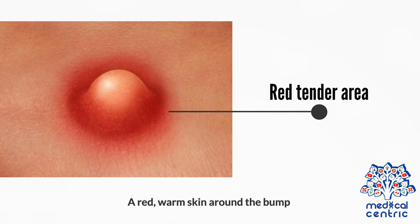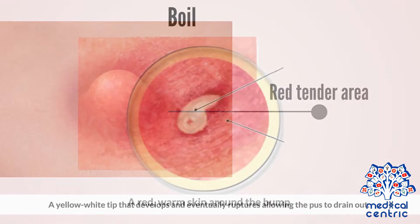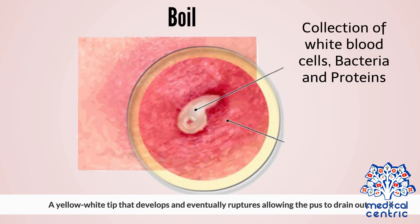Symptoms include a painful red bump, a red warm skin around the bump, and a yellow-white tip that develops and eventually ruptures, allowing the pus to drain out.